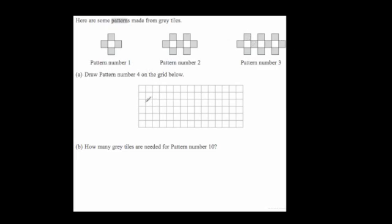It then says draw pattern number 4 on the grid. Looking at pattern 3, we've got 3 on the top row and middle rows increasing. So pattern 4 needs 4 on the top row, 5 in the middle row, and another row on the bottom. That's our pattern — it would look something like that.